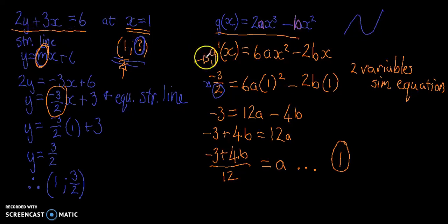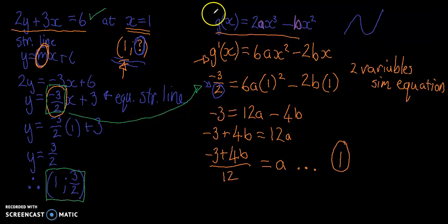Questions like these are far more easily done if we check off the information we've used. So we've used the information about the straight line, and we used it to find the gradient of the straight line and then make it equal, or the derivative equal to it. And we also used it to find the point on the Cartesian plane where the straight line goes through, as well as where the cubic function goes through.